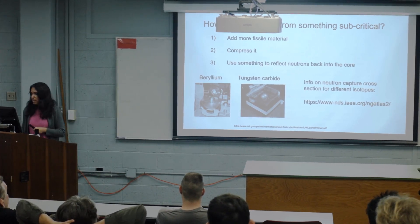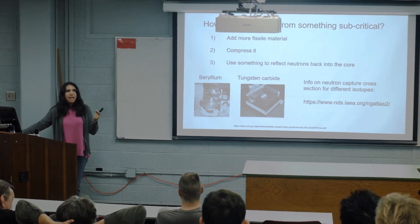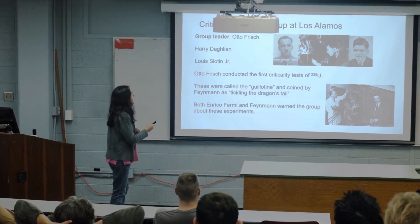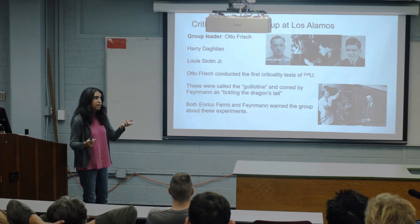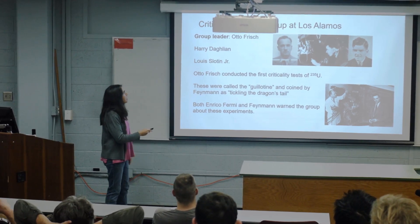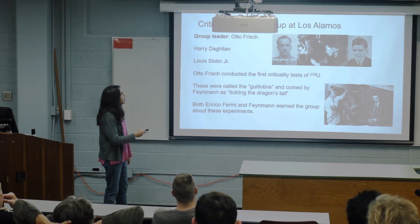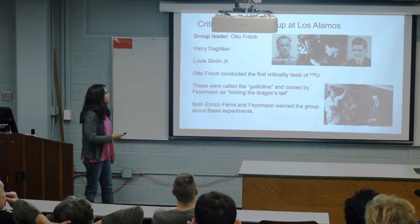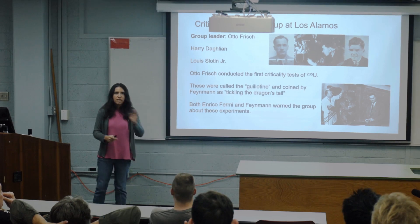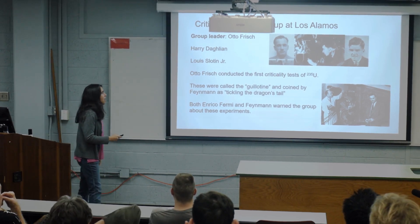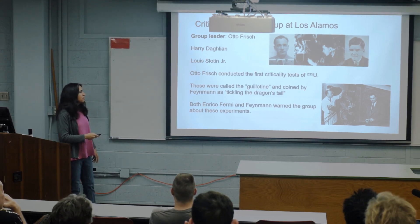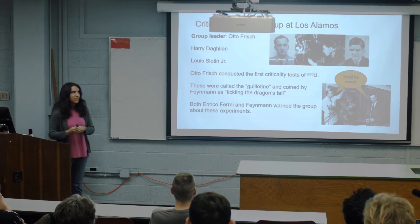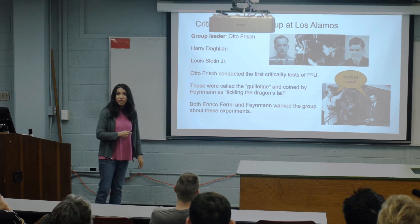The critical assembly group at Los Alamos was formed to design bombs to get criticality. The group leader was Otto Frisch — one of those who discovered fission along with his aunt Lisa Meitner. Harry Daglian Jr. and Louis Slotin were also members. Frisch conducted the first criticality tests of uranium-235, called the guillotine experiments, coined by Feynman as 'tickling the dragon's tail.' Both Enrico Fermi and Feynman warned the group about these experiments, saying they were really dangerous.